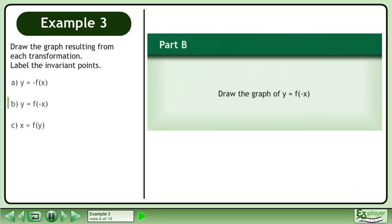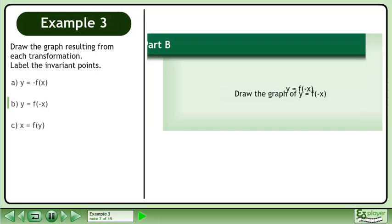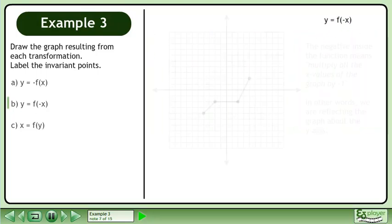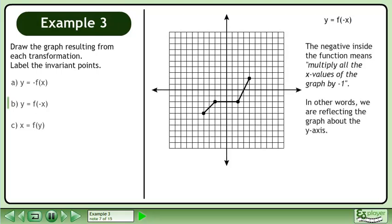In part B, we'll draw the graph of y equals f of negative x. The negative inside the function means multiply all the x values of the graph by negative 1. In other words, we are reflecting the graph about the y axis.